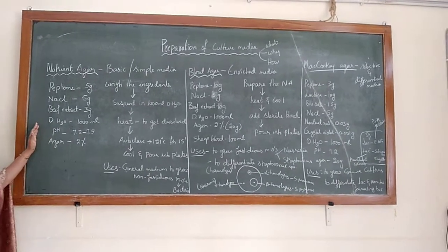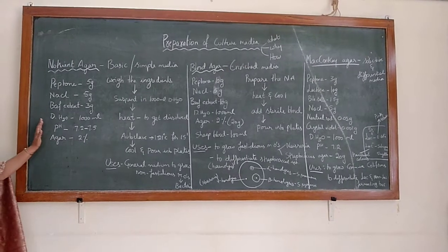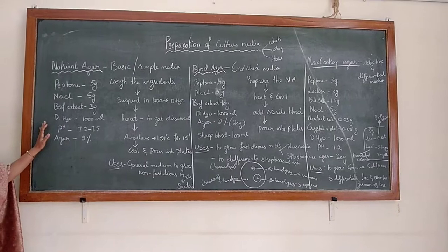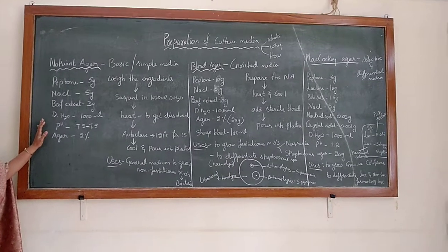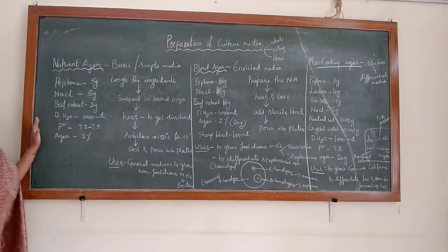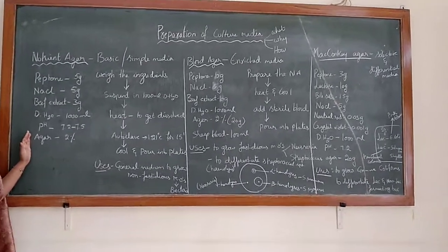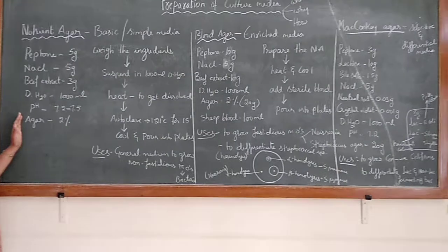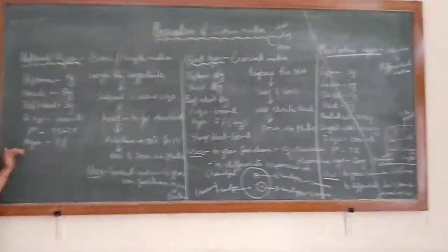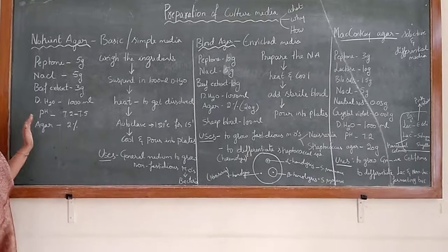Coming to the composition: each and every culture medium should have a source of nitrogen, carbon, and mineral salts along with growth factors. If we want to grow organisms in a solid medium, we need to add the solidifying agent, which is agar. If we exclude the agar, it becomes a liquid medium.